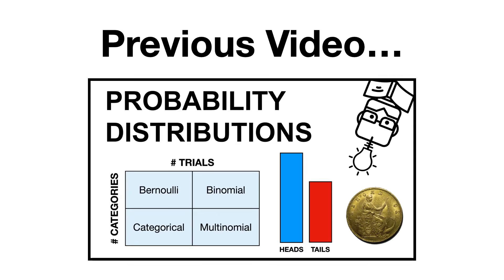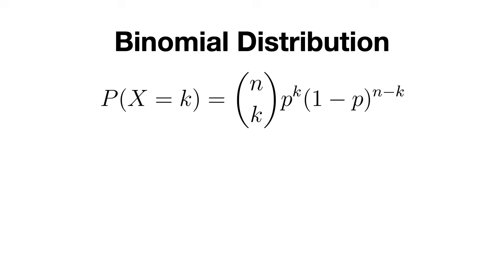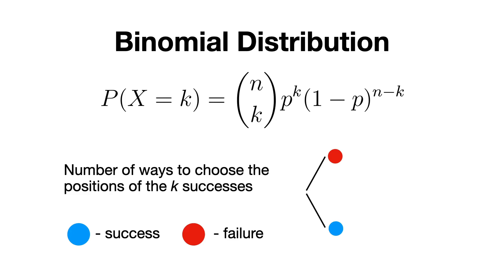In a previous video, we talked about the binomial distribution, among other distributions, and we said that it models the number of successes in a fixed number of independent trials, where each trial has the same probability of success p. For example, flipping a coin 10 times and counting how many heads we've got could follow a binomial distribution.